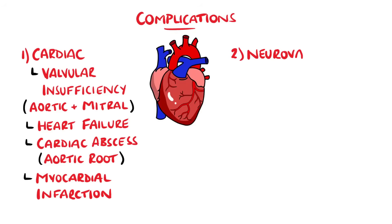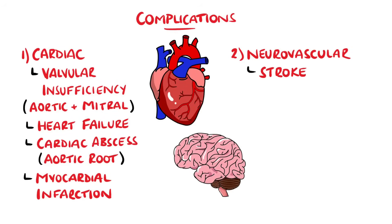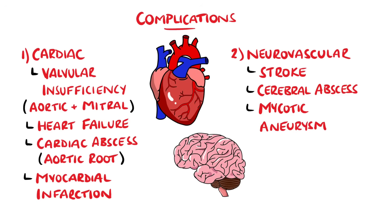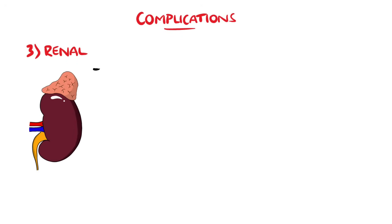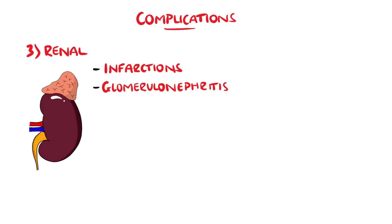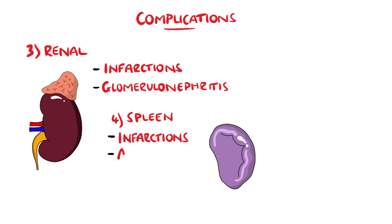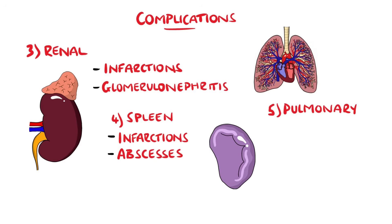The central nervous system is commonly affected, including ischemic and hemorrhagic strokes, and the formation of cerebral abscesses. Mycotic aneurysms, which are aneurysms caused by infection of the vessel wall, can form throughout the body's vasculature, but are particularly common in the cerebral vessels. Emboli can travel to the kidneys and cause renal infarctions, and immune complexes formed to the emboli can deposit in the kidneys causing glomerulonephritis. The spleen is also a common site of embolization, leading to infarction and abscess formation. If the emboli go into the pulmonary circulation, such as when the tricuspid valve is affected, this can lead to septic pulmonary embolism.